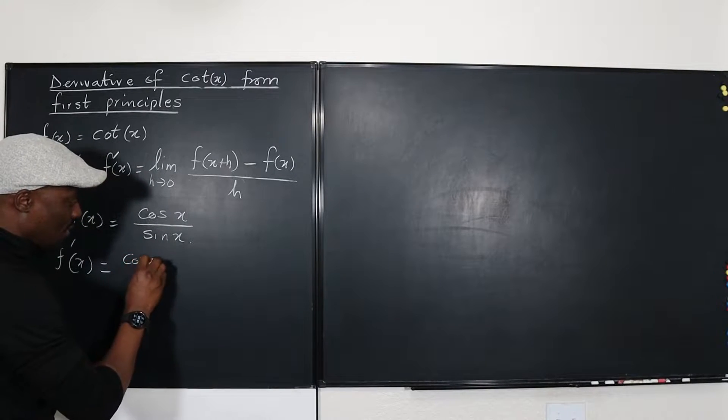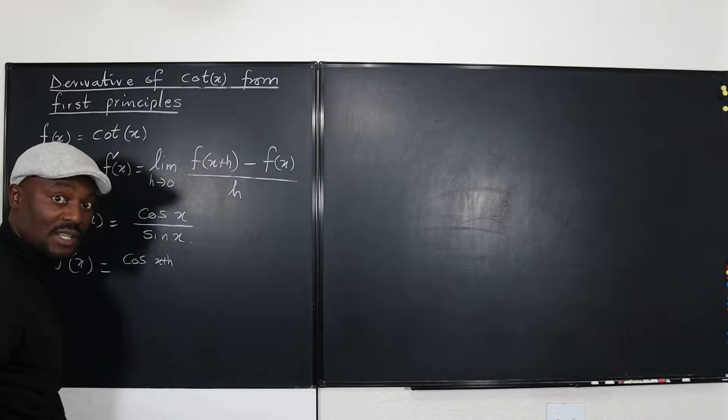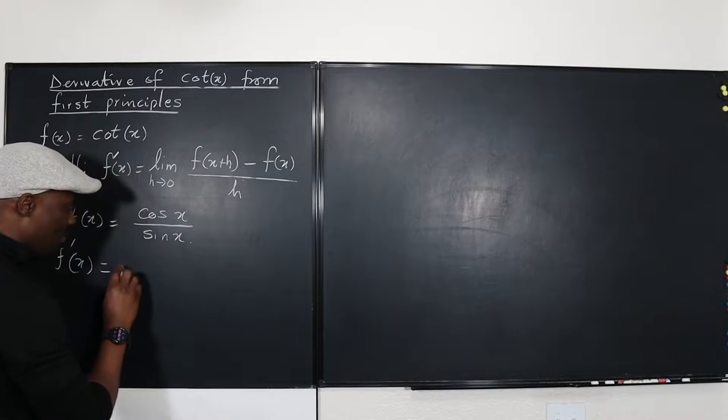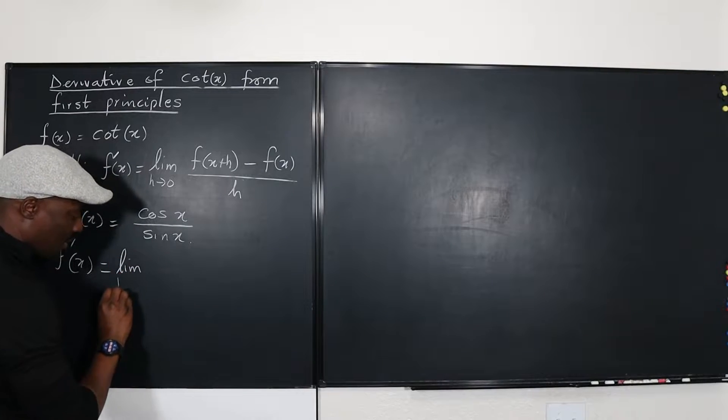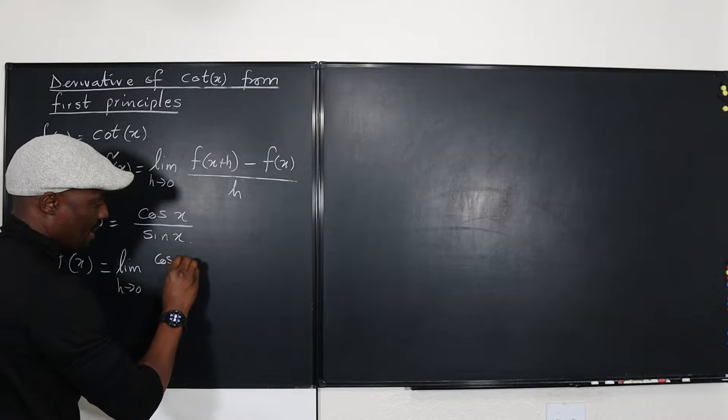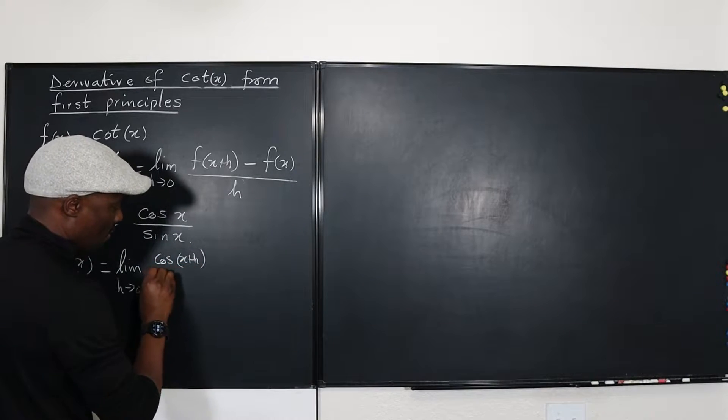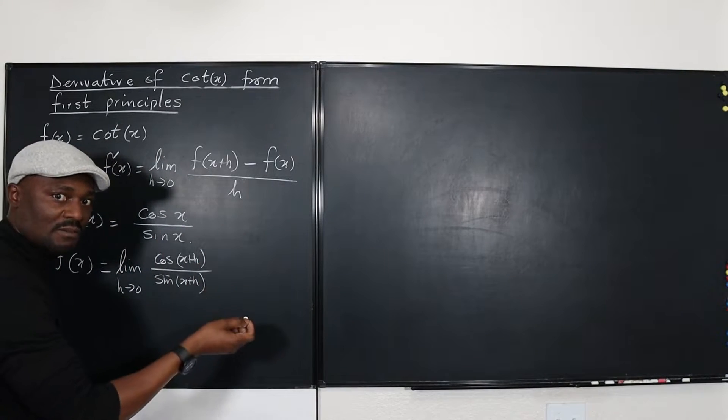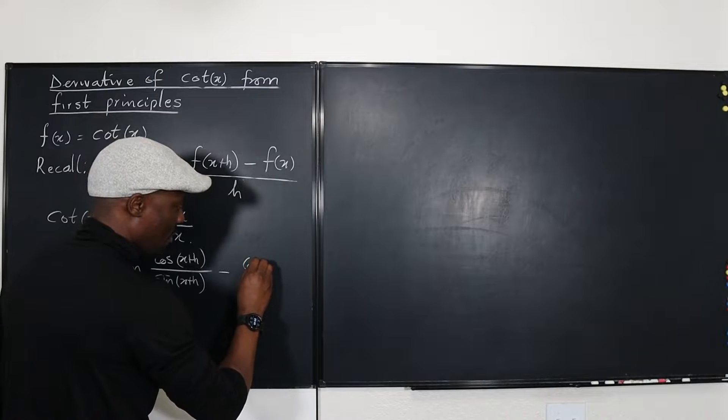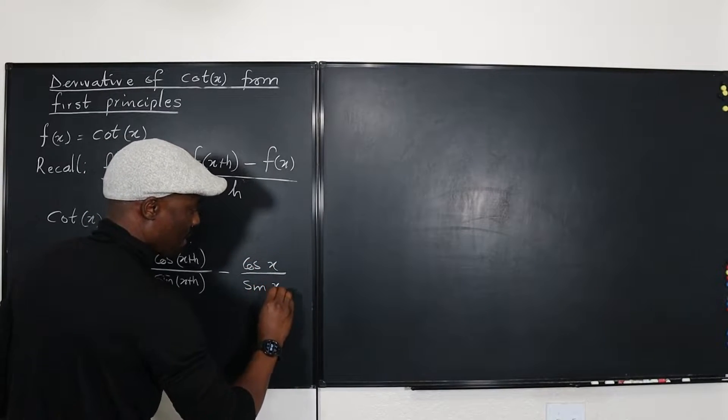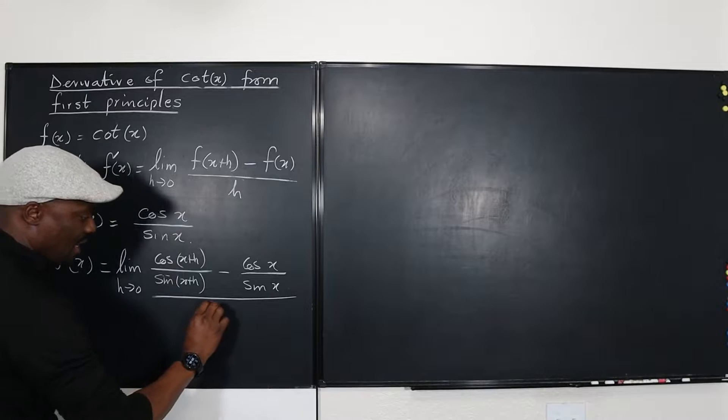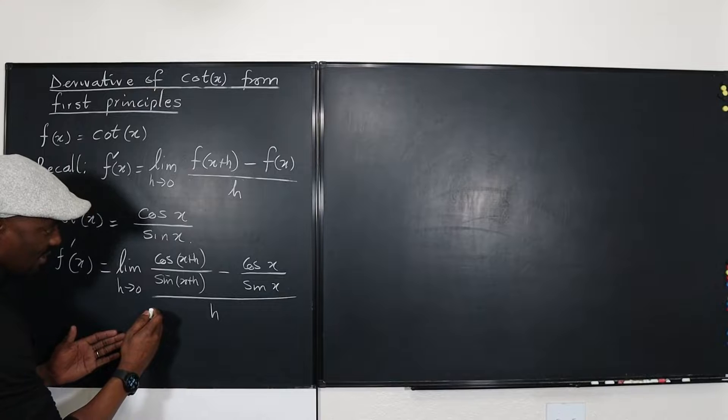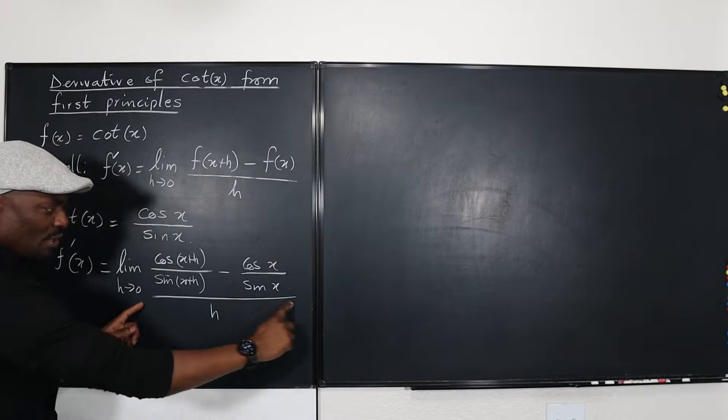So this is going to be the cosine of x plus h. Oh, sorry. We've got to take the limit. So this is going to be the limit as h goes to zero of the cosine of x plus h over the sine of x plus h, because that's the meaning of cotangent of x plus h, minus the cosine of x over the sine of x, all divided by h. That's basically what we're looking for. And this should be in the middle here. But I hope you get that.